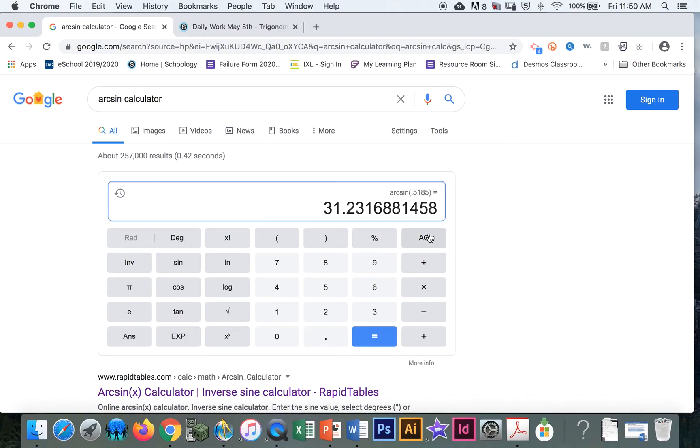Here we are. Clear this out from the last problem. And we are using the tangent. But we know the decimal. We're looking for the angle. So we do 2nd tangent. Type in the decimal. 0.4731. Hit enter. And there it is. 25.31 degrees. And we're just going to use the first decimal place.